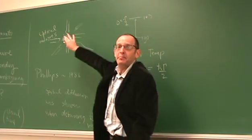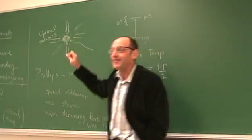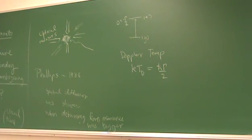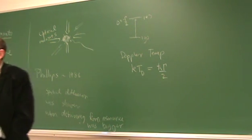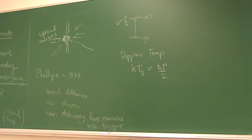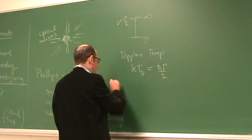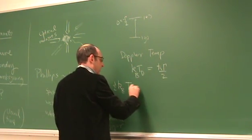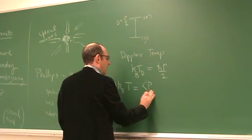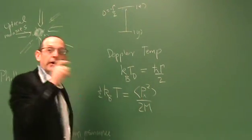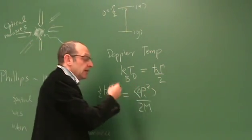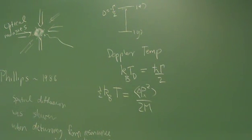How do you measure the temperature of these atoms? You're not going to stick a thermometer in there — you'd just heat them up. What you really are doing is measuring the spread in velocities. The temperature per degree of freedom: one-half k_B times T equals the mean-square momentum in some direction divided by the mass. By measuring the spread in momentum, you're measuring the temperature.